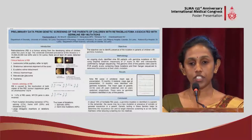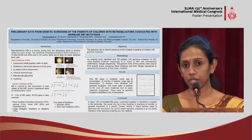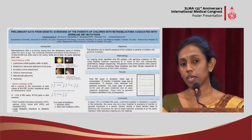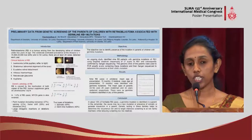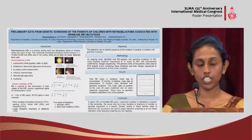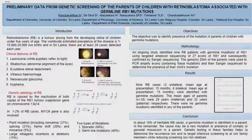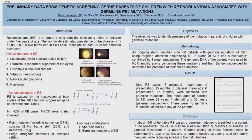Retinoblastoma is caused by inactivation of both copies of the RB1 gene on chromosome 13q14. This inactivation can occur by point mutation or large insertions or deletions. There are two types of mutations: sporadic and germline mutation. The picture illustrates the germline and sporadic mutation.